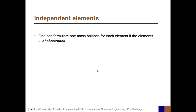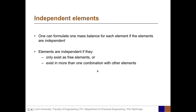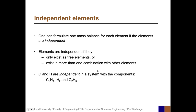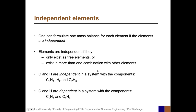One important concept is the concept of independent elements, because one can formulate one mass balance for each element if the elements are independent. Elements are independent if they either only exist as free elements, or exist in more than one combination with other elements in the system. For example, in a system with three components C2H4, H2, and C2H6, the two elements C and H are independent because they exist in more than one combination with other elements. However, in a system with only C2H4 and C4H8, C and H are dependent because they do not exist in more than one combination with other elements.